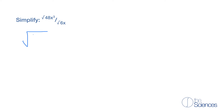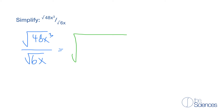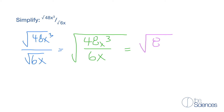Simplify the square root of 48x cubed over the square root of 6x. This is the same as the square root of 48x cubed over 6x. Now we have 48 divided by 6, which is 8, and x cubed divided by x is x to the third minus 1, so it's 8x squared.